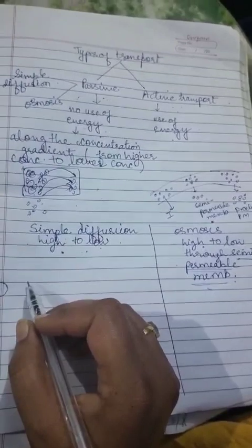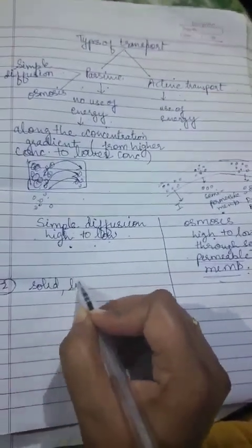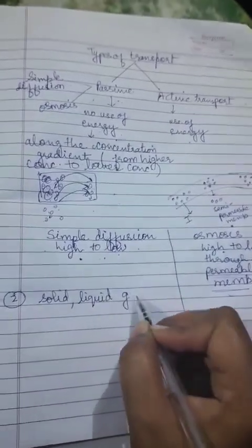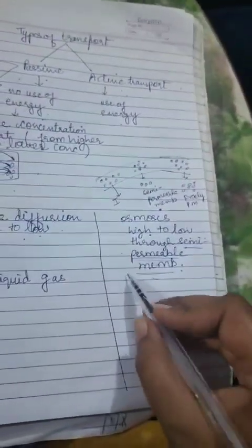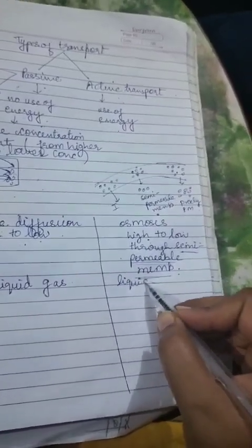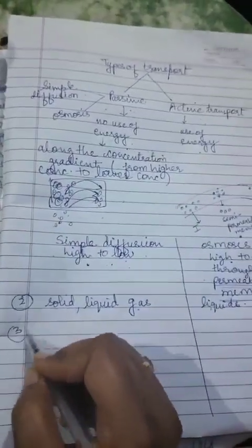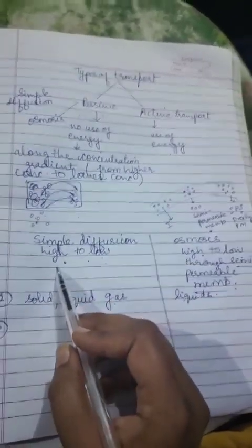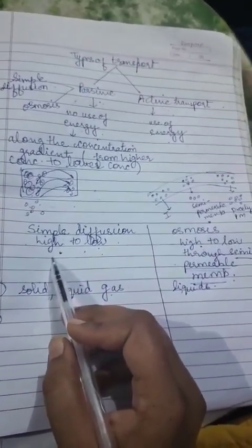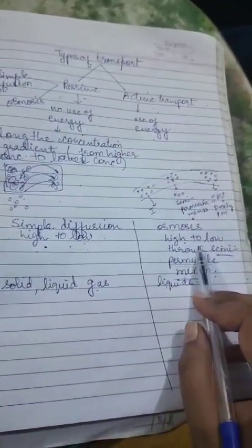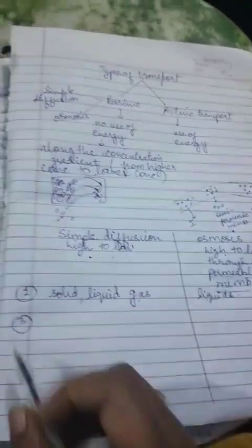Second point in simple diffusion: it is applicable for solid, liquid, and gas. Whereas osmosis is applicable for liquids only. Simple diffusion hoga sabhi mediums mein — solid, liquid, and gas — whereas osmosis is only for liquids. Third difference: in simple diffusion there is no requirement of a selectively permeable or semi-permeable membrane. In osmosis, this process requires a selectively permeable membrane.